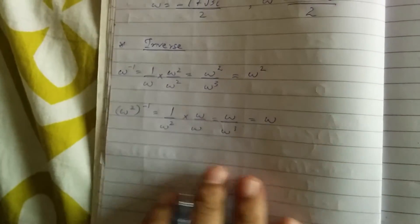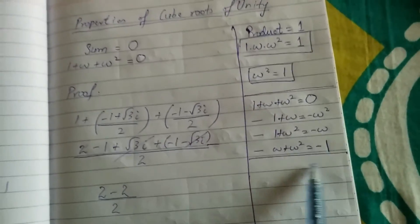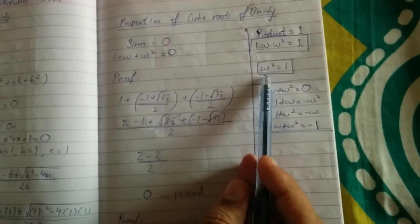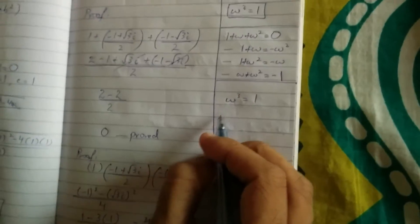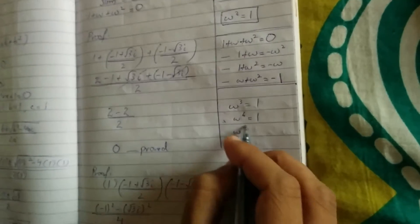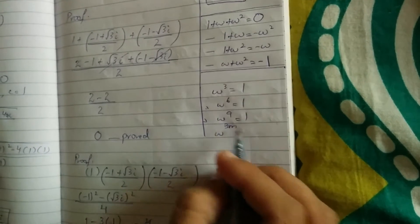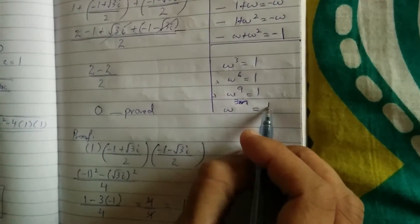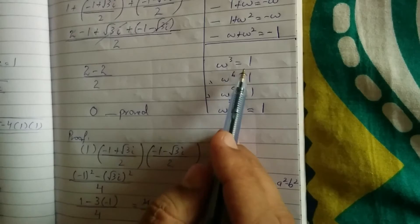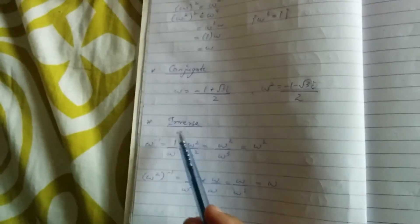Here we studied the basic properties of cube roots of unity: the sum equals 0 and the product equals 1. Another property is that omega cube equals 1, so omega to the power 6 will be 1, and omega to the power 9 will be 1. Whenever a multiple of 3 is put as the power of omega, the answer is always 1, because omega cube is 1. Further properties: omega and omega square are squares of each other, conjugates of each other, and inverses of each other.